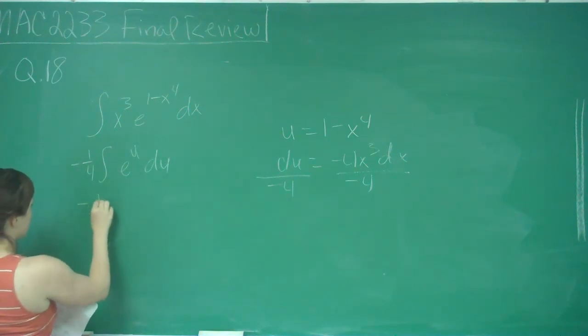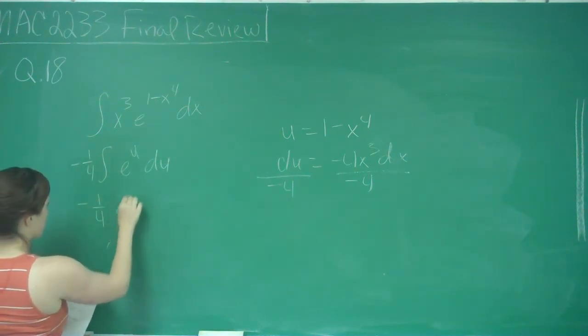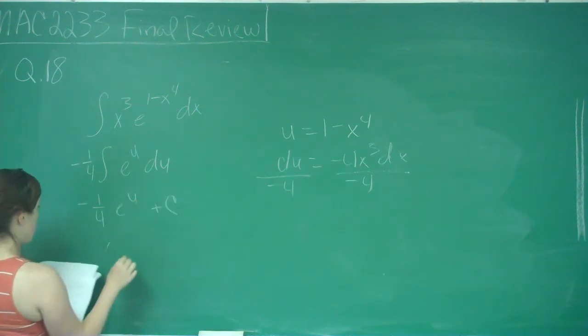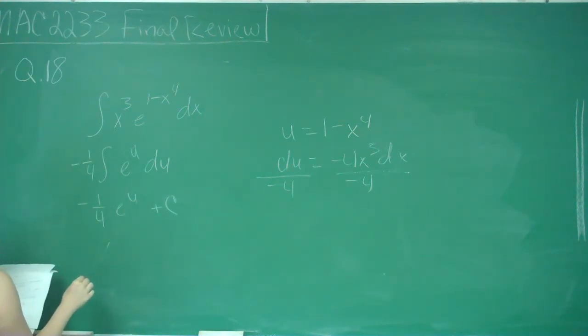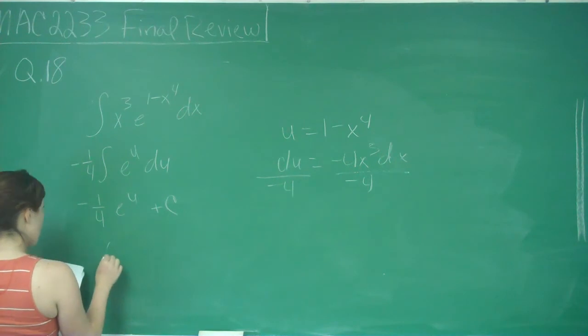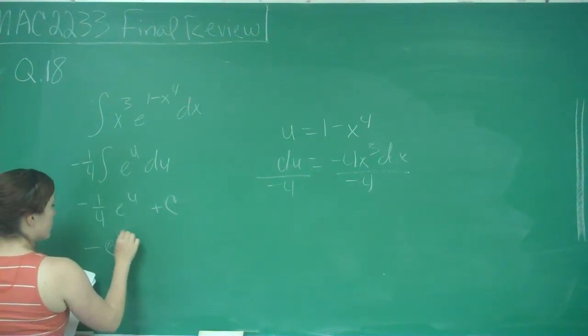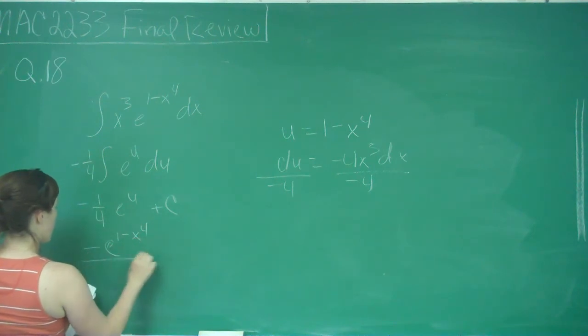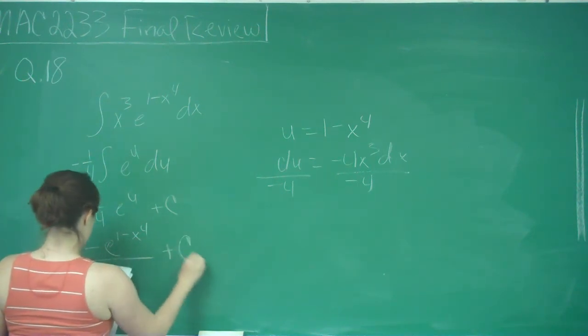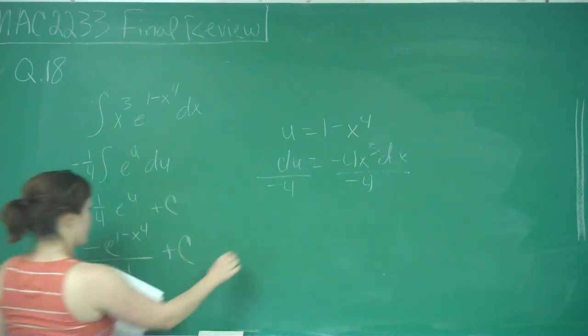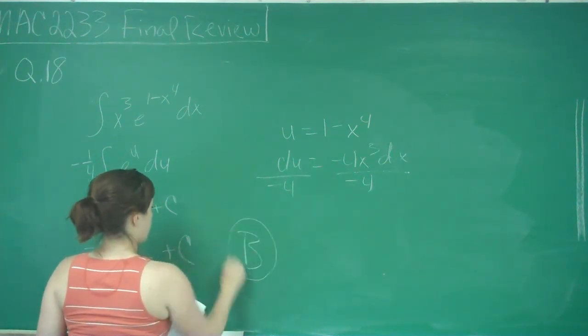And so when I integrate this, I get negative e^u over 4 plus C, which is negative e^(1-x⁴) over 4 plus C, which is answer choice B.